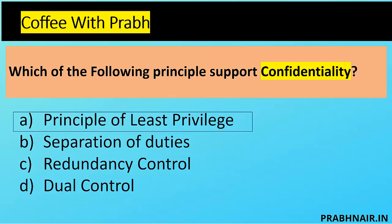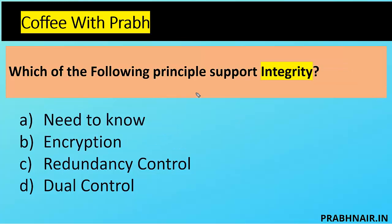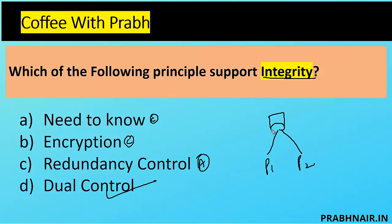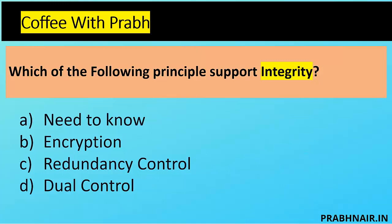Next question: which of the following principles supports integrity? Integrity is about protecting data against unauthorized modification and ensuring the correctness of data. Need-to-know achieves confidentiality; encryption achieves confidentiality; redundancy achieves availability. The only option left is dual control — requiring the presence of two people simultaneously to operate a transaction. Without person two, person one cannot operate, and vice versa. Therefore, the answer is dual control for integrity.